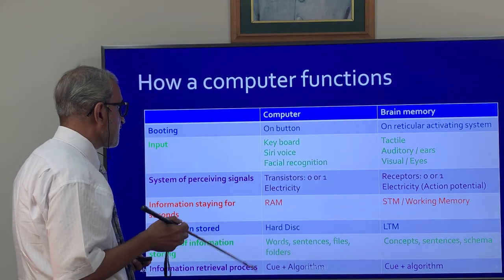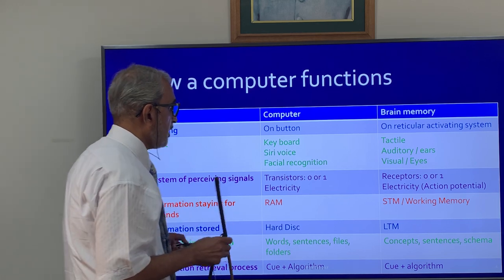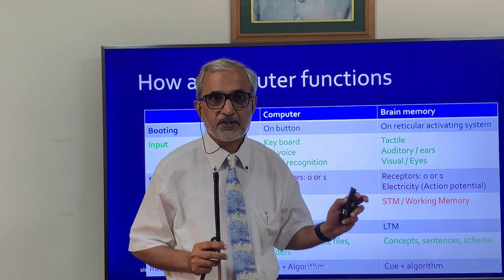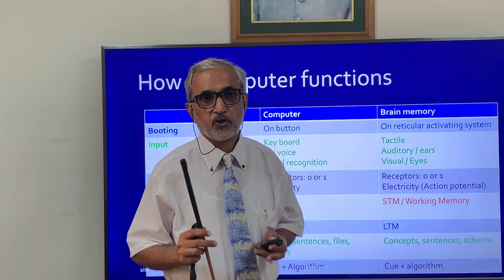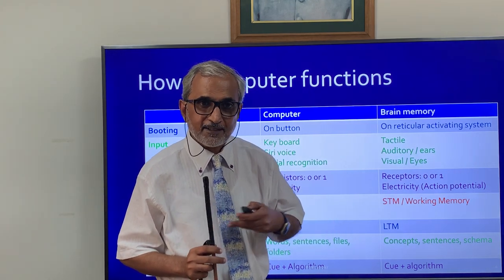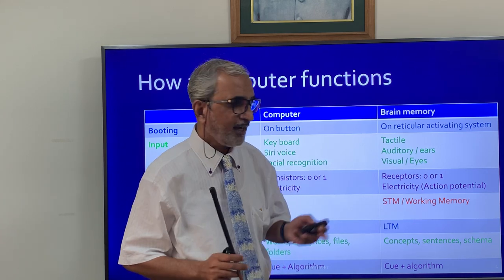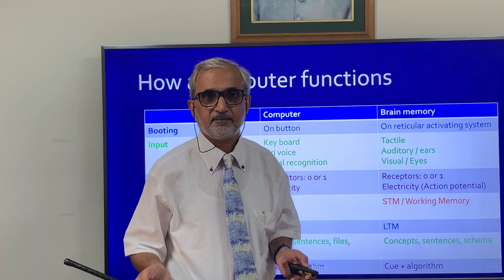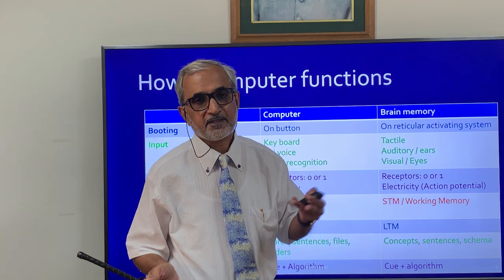The system perceiving signals in a computer uses transistors where electricity causes each transistor to be on or off. In a human body it is also electricity, but in the form of action potentials, and instead of transistors there are receptors which are either activated or inhibited.